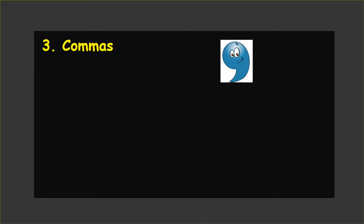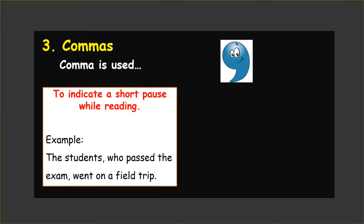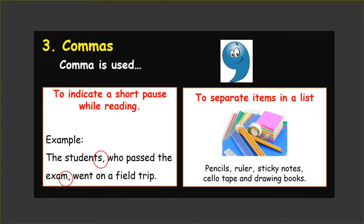Next one is commas. Have you ever used commas when you are writing? A comma is used to indicate a short pause while reading. For example: 'The students who passed the exam, went on a field trip.' Have you noticed where I stopped? So, a comma is used to indicate a short pause while reading. Comma is also used to separate items in a list.